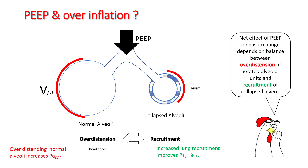Try to figure out the optimal PEEP and understand that the net effect of PEEP on gas exchange depends upon the balance between over-distension of aerated alveolar units and recruitment of collapsed alveoli. Also know that if you are over-distending the alveoli, you can certainly cause more injury to these alveoli.